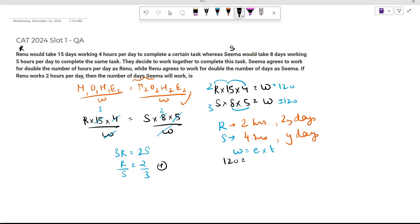What is the work? Work is 120 units. What is efficiency of R? Efficiency of R is 2, and she is working 2 hours per day for 2y days, plus the efficiency of S is 3, she is working 4 hours per day for y days.